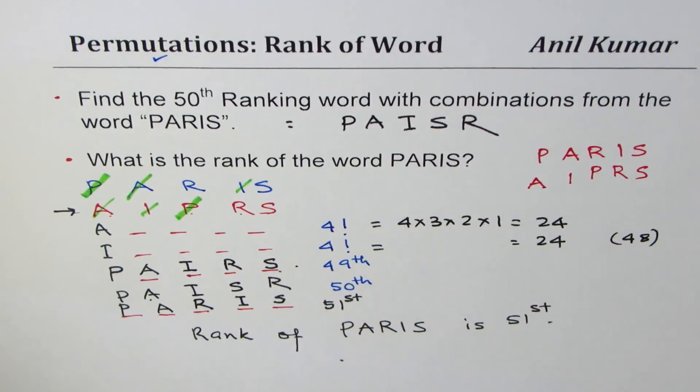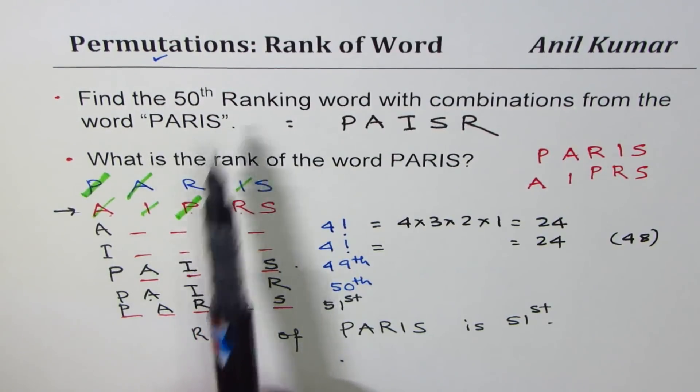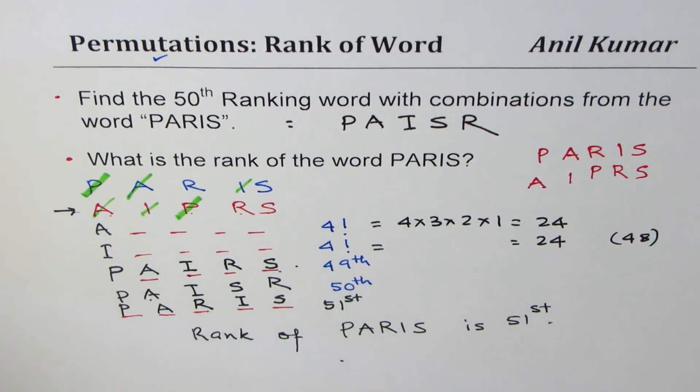It is the 51st word which can be formed using the letters P, A, R, I, S if all those words are arranged in alphabetical order as placed in dictionary. So that is how you could get to this result. I hope you find it interesting. You can always share my videos and feel free to post comments. Thank you and all the best.